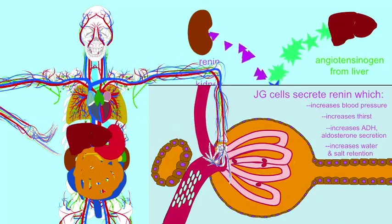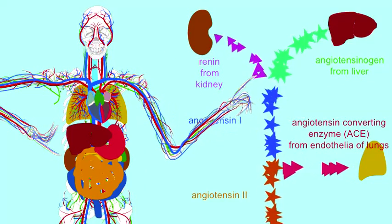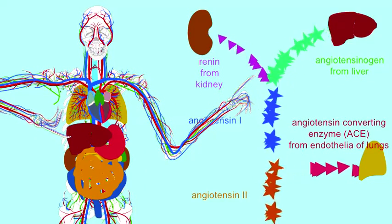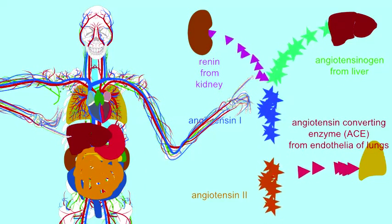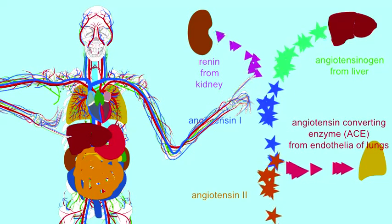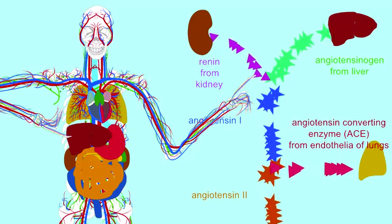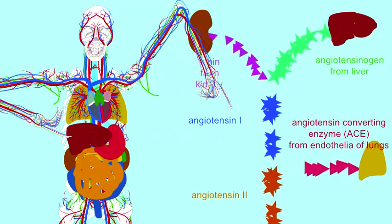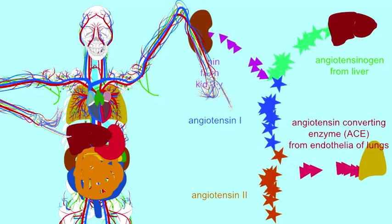Renin, the enzyme, splits a protein made by the liver known as angiotensinogen to convert it into angiotensin 1.